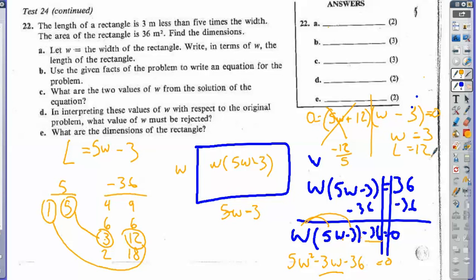So now let's read what they want us to do. Let w equal the width of the rectangle, write in terms of w the length. And so that is right here. So your length is equal to 5w minus 3. All right.